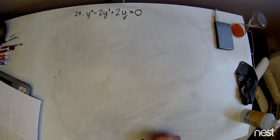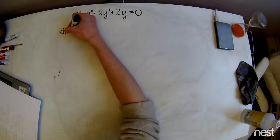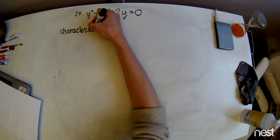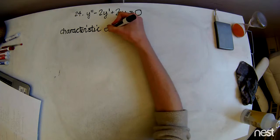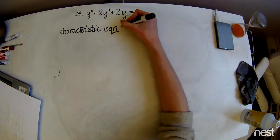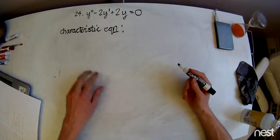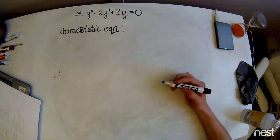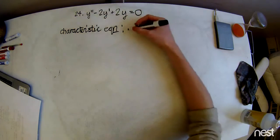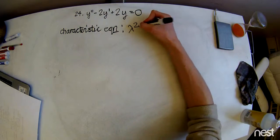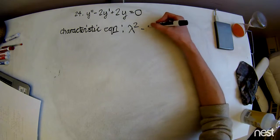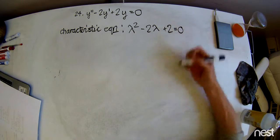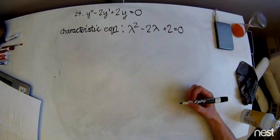So the first step is to define the characteristic equation. So that's just going to take the coefficients multiplying out each of these derivative terms. So we have a one here, so we're just going to have lambda squared, then we'll have minus two lambda plus two, and that's going to equal zero. So now we just need to solve for lambda.